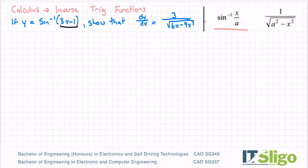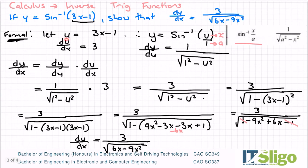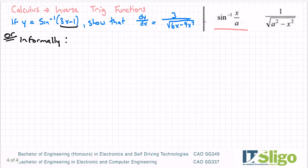So if I was to do it informally, that just means I don't sub in u for 3x minus 1. I kind of do it all in one go. So what do I mean by that?